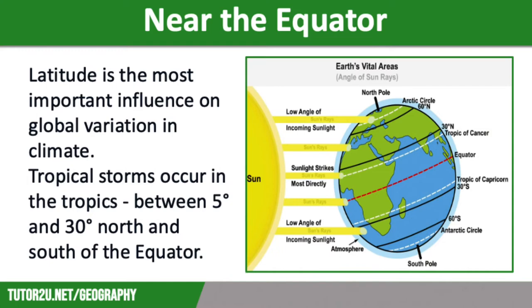This means that air along the equator gets heated more. That heated air is less dense, so it rises up, forming an area of low pressure, and the formation of clouds that are a vital ingredient of a tropical storm.